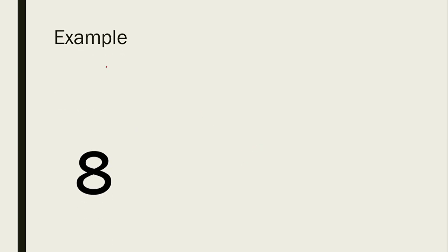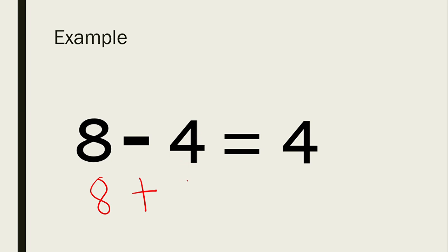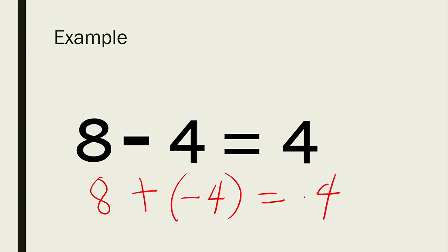Let's have the example: 8 minus 4. Following whole number subtraction, the answer is 4. Now applying the KCC rule: keep the minuend — copy 8. Change subtraction to addition. Change the subtrahend: positive 4 becomes negative 4. Then following the rules for adding different signs, 8 minus 4 is 4, and the sign of the greater absolute value — 8 — is positive. Therefore the answer is positive 4. Both methods give the same answer.